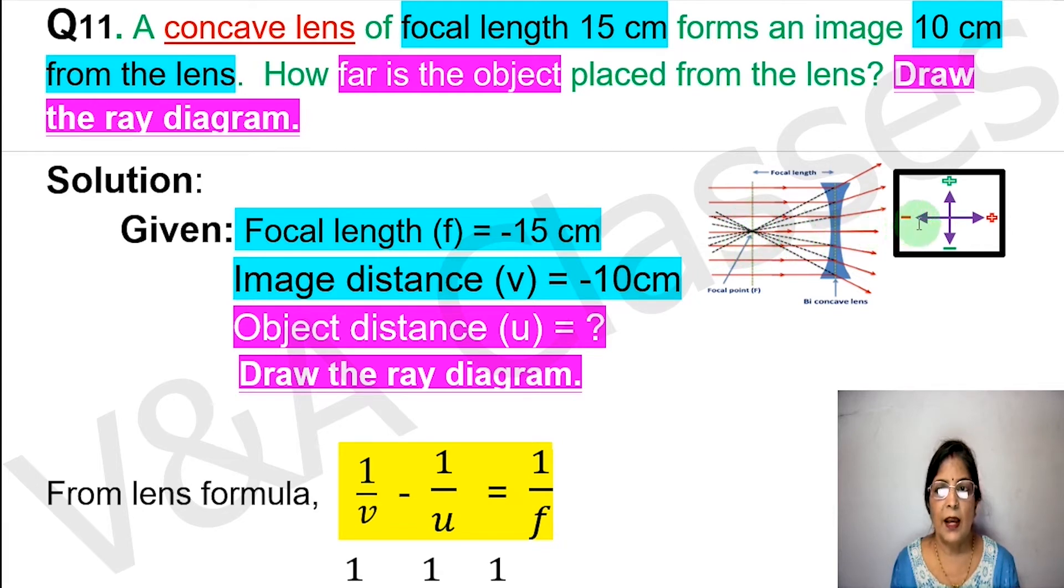Next given is image distance v equals to minus 10 centimeter. The question gives 10 centimeter but we write minus 10 centimeter. This is because the concave lens forms the image on the left side, and if the image is on the left side then the image distance value will have a minus sign. We need to find object distance u and also draw the ray diagram.